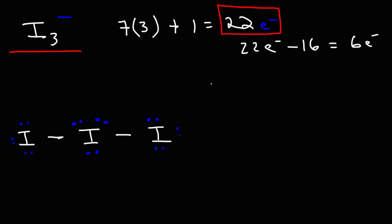Now, let's calculate the formal charges of the elements in this structure. So the formal charge can be calculated by taking the number of valence electrons and subtracting it by the bonds and dots of the element.